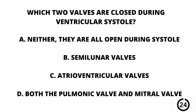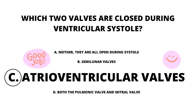Question number fourteen. Which two valves are closed during ventricular systole? A. Neither — they are all open during systole. B. The semilunar valves. C. The atrioventricular valves. Or D. Both the pulmonic valve and the mitral valve. Our answer here is C. The atrioventricular valves.